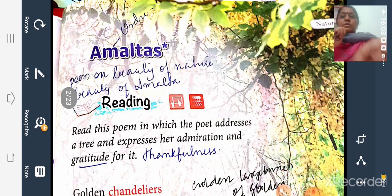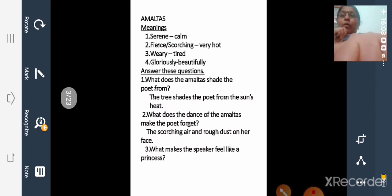Then from this lesson, from this poem, I think I have given three, four meanings. Serene means calm. Fierce or scorching means very hot. Then weary tired, gloriously beautifully.